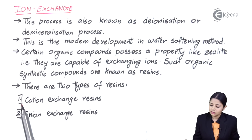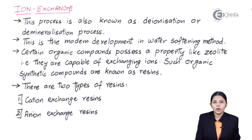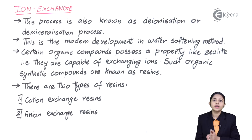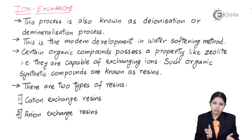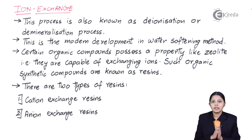Such organic synthetic compounds are known as resins. There are two types of resins: one, cation exchange resin, and the second is anion exchange resin. We are going to use both of these resins and pass hard water through them, removing all the impurities, then removing all the dissolved gases which make the water hard. Once that is done, we will finally get soft water.